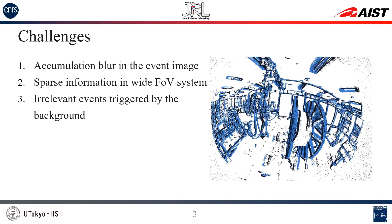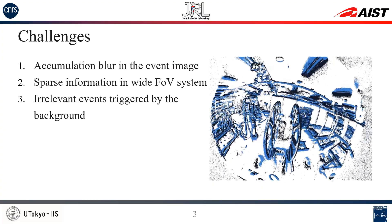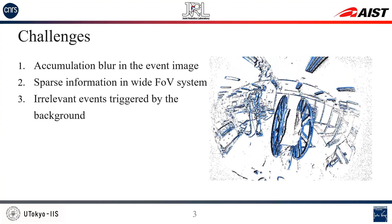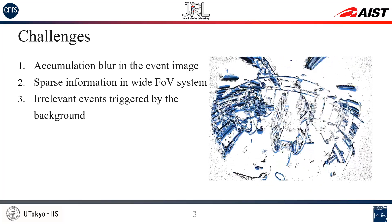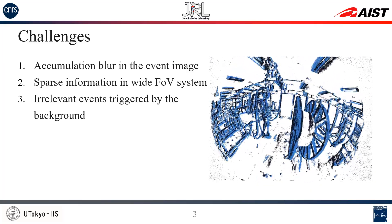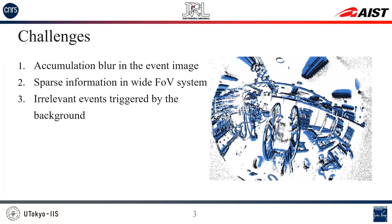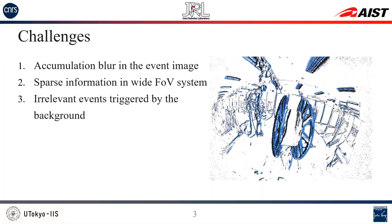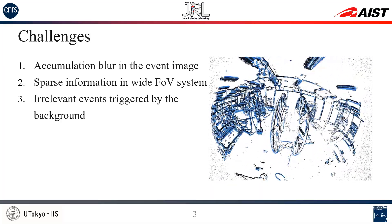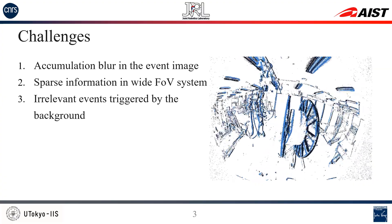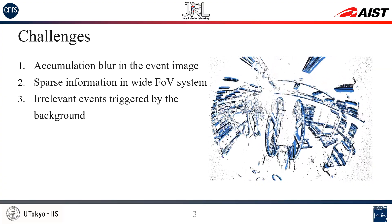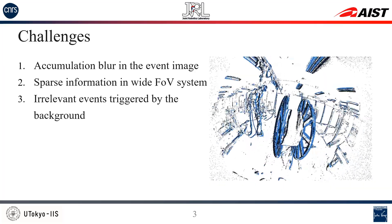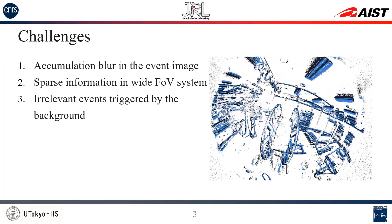There are three main challenges in this problem. First, when accumulating events in one frame, accumulation blur is unavoidable. Second, the camera field of view is not filled with information, making the tracking harder. Third, many events are also triggered by the background, which is unpredictable. This also makes the polarity unreliable.